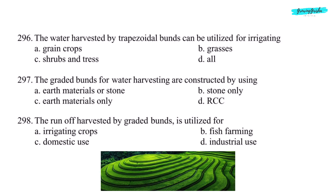Next question: the water harvested by trapezoidal bunds can be utilized for irrigating — option D, all of the above. Next question: graded bunds for water harvesting are constructed by using — option A, earth materials or stone.